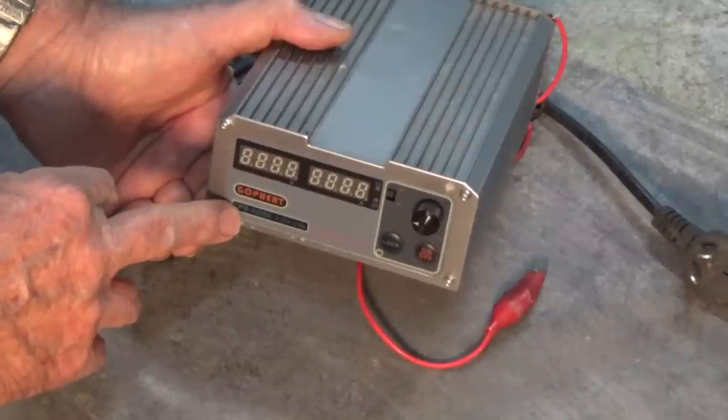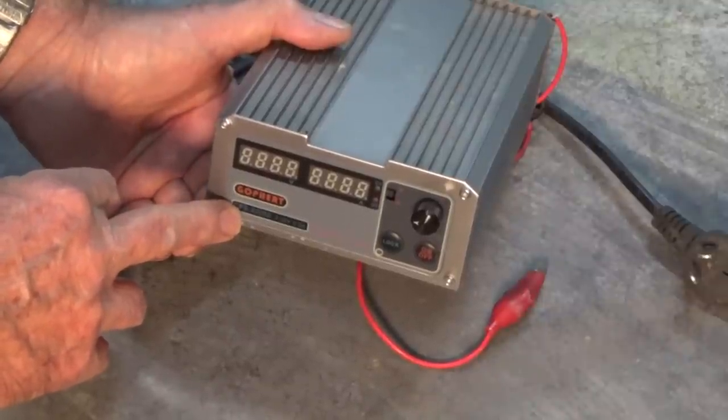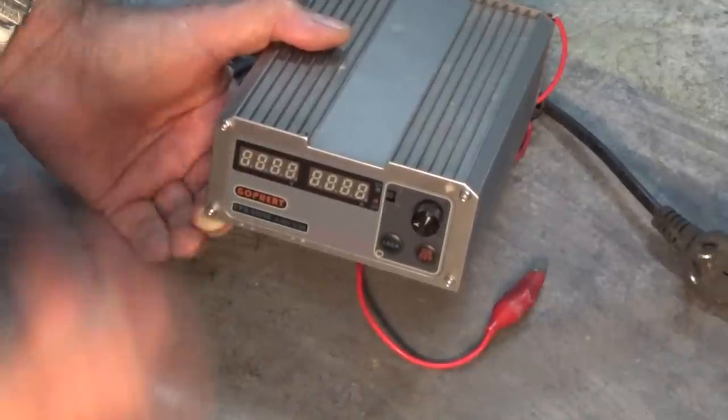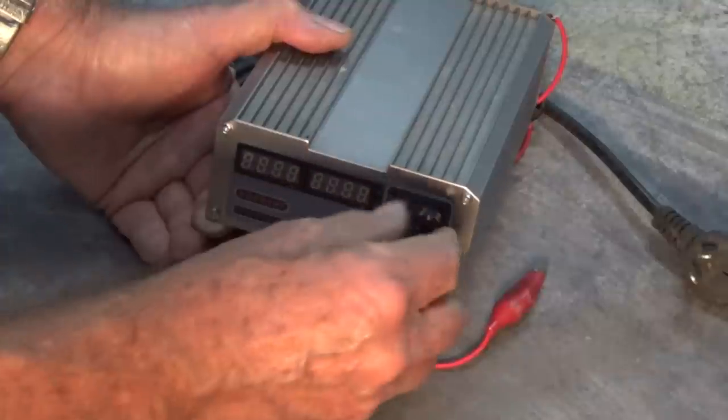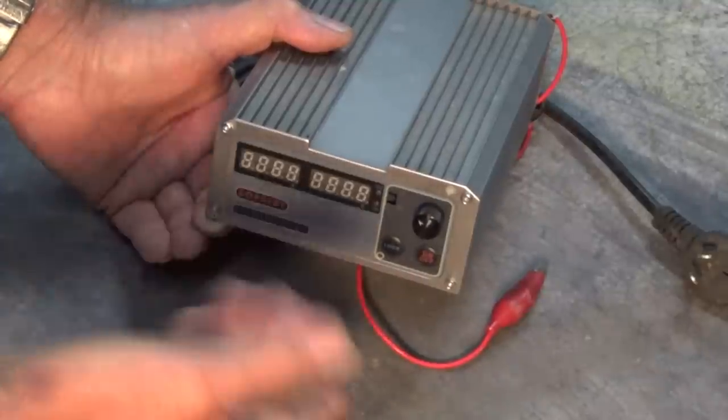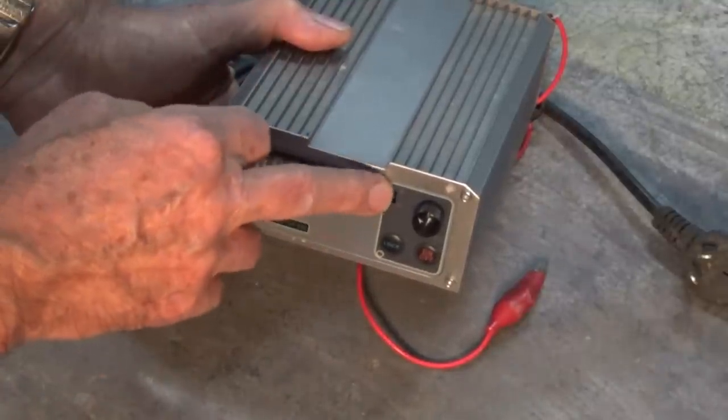This one will do up to 32 volts DC and up to 5 amps. It's small, compact, lightweight. It's got a little encoder here which allows you to set the voltage and the amperage and that's selectable by this slide switch. So it'll do constant current or constant voltage.